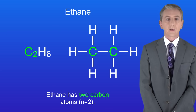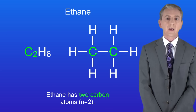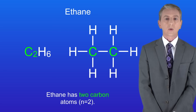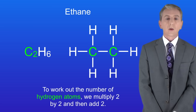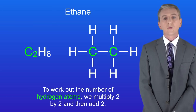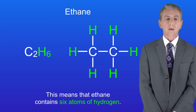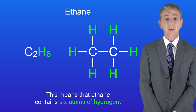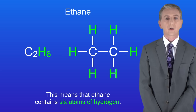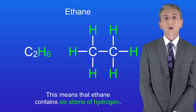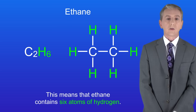Looking at ethane, we can see that ethane has 2 carbon atoms, so in this case n equals 2. To work out the number of hydrogen atoms, we multiply 2 by 2 and then add 2. This means that ethane contains 6 atoms of hydrogen. It's really important that you learn the general formula for alkanes, as you could be asked to use it in your exam.